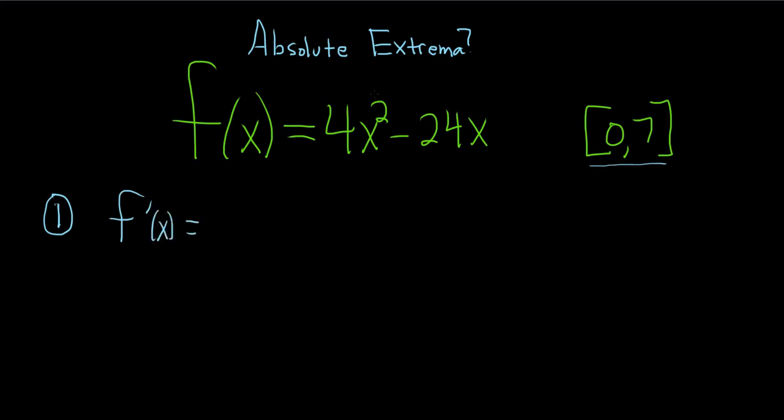So let's see. So here, we're going to use the power rule. So 2 times 4 is 8. So we get 8x minus, and then the derivative of 24x will just be 24.